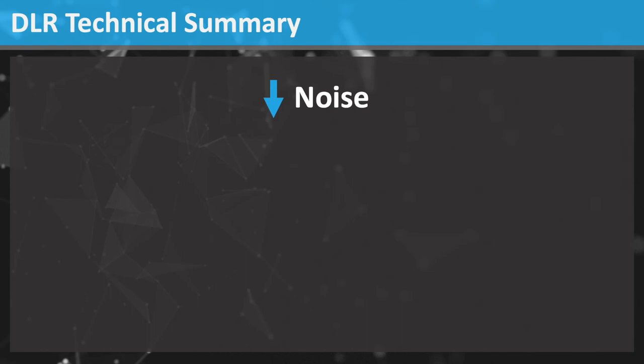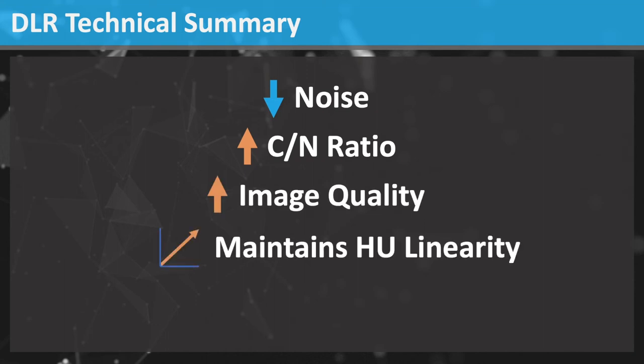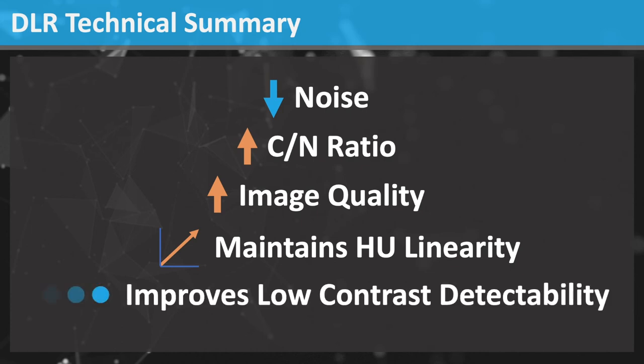Here is a quick DLR technical summary. DLR lowers image noise, increases the contrast to noise ratio, and increases image quality. DLR also maintains Hounsfield unit linearity and improves low contrast detectability. This is not magic but is simply a benefit of deep learning solving a complex problem.